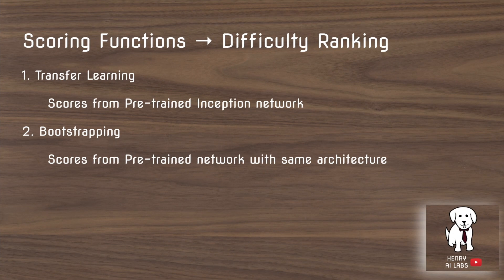They use two techniques for scoring functions. The first is transfer learning from a pre-trained network, such as the GoogLeNet Inception network. They take this pre-trained network, identify which samples it has poor classification scores for, and use that to rank the difficulty of each sample in the training set.